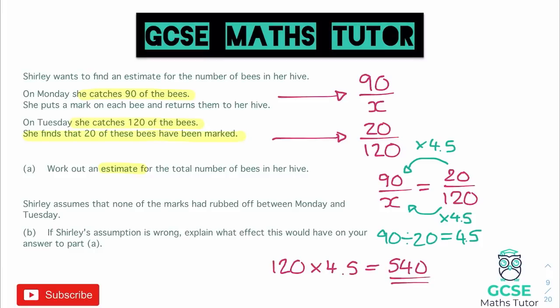So our estimated value for the total number of bees in the hive is 540. There are other ways of approaching this, but this is the method I tend to use by equating equivalent fractions. Now in finding that answer, we do make some assumptions — particularly in this real-life scenario. We assume that none of the marks have rubbed off between the days, that none of the bees have died, that they haven't emigrated to a different hive, and that no other bees have emigrated into the hive.